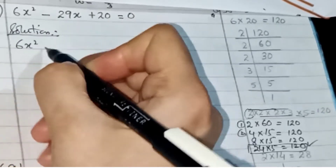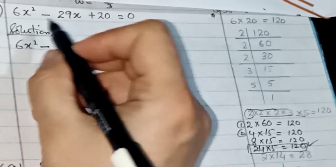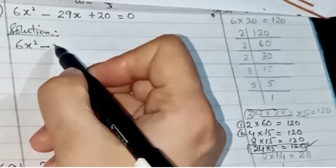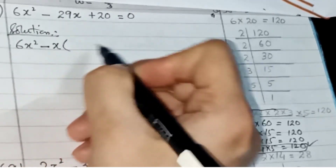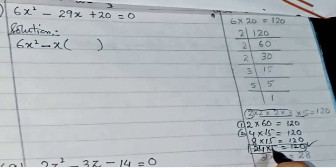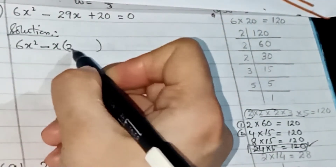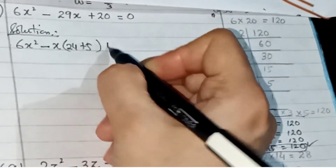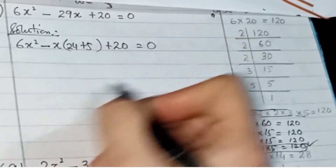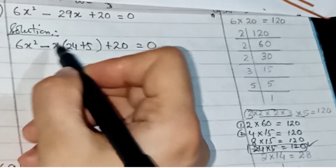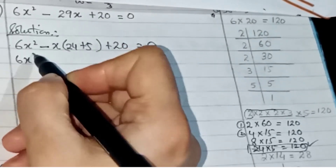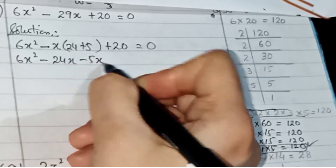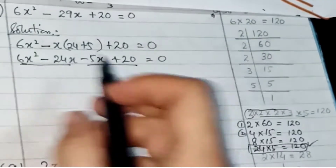We write 6x² and then, because the sign is minus, we take the minus sign and x outside the bracket, and inside we add 24 plus 5, then plus 20 equals 0. Multiplying the minus x inside gives minus 24x minus 5x plus 20 equals 0.